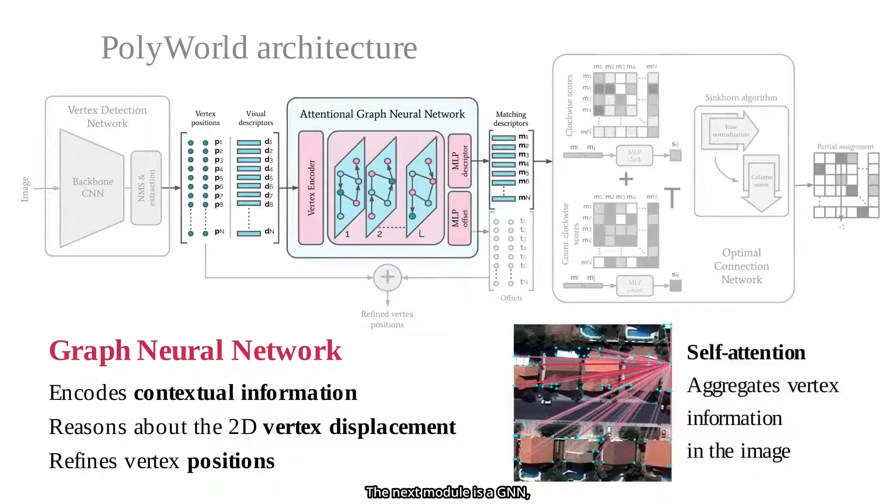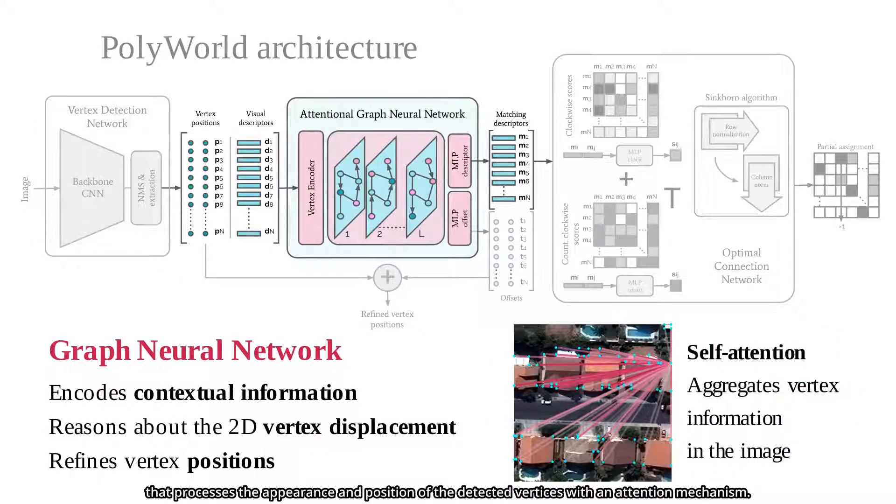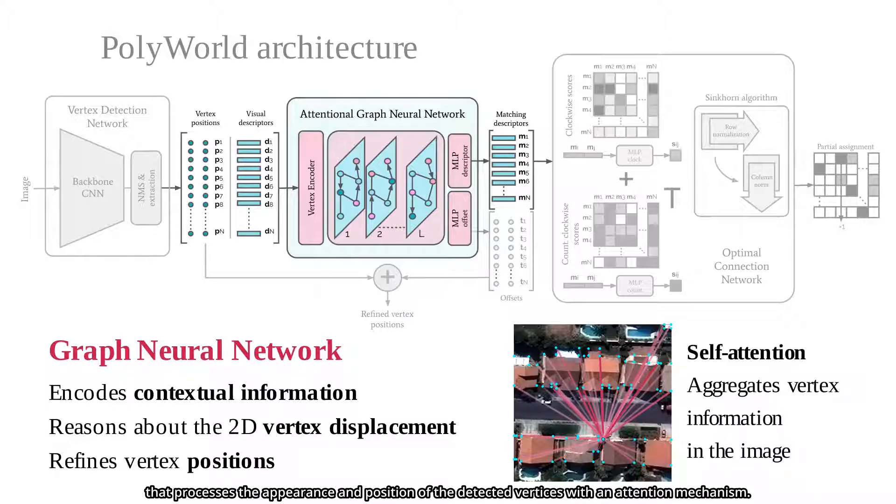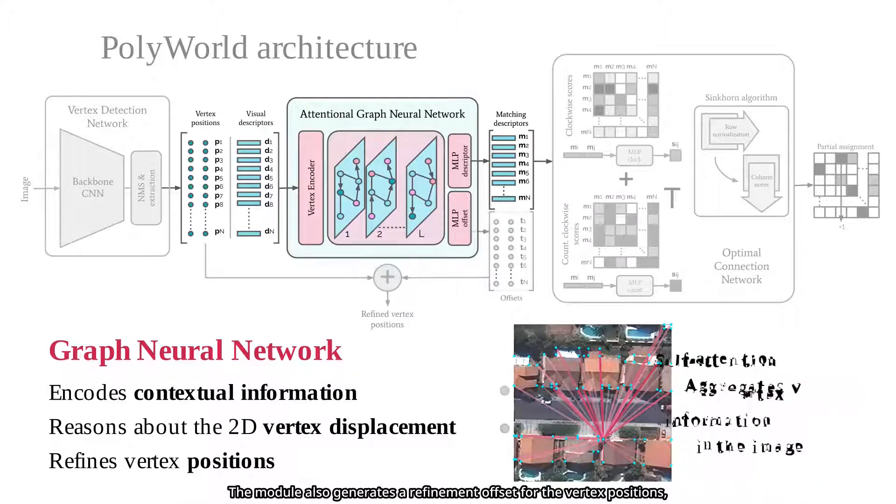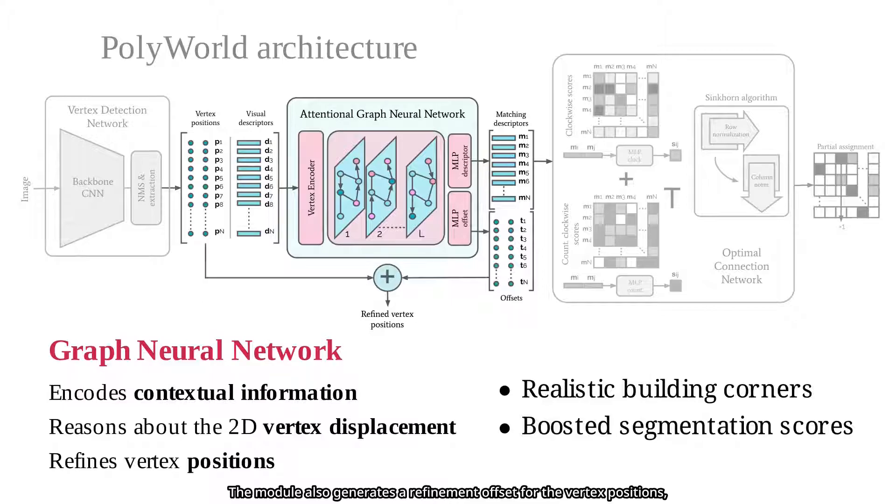The next module is a graph neural network that processes the appearance and position of the detected vertices with an attention mechanism. The module also generates a refinement offset for the vertex positions, minimizing a combined angle and segmentation loss.